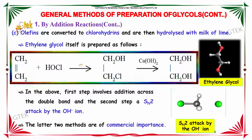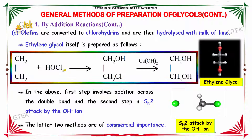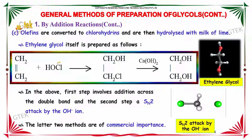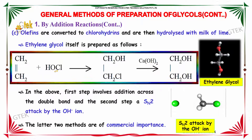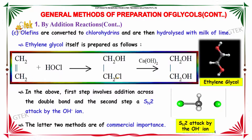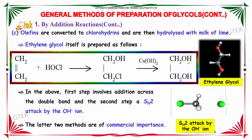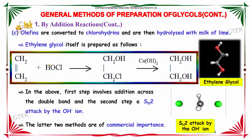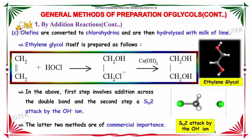The third method is that olefins are first converted to chlorohydrins and are then hydrolyzed with milk of lime, which is calcium hydroxide (Ca(OH)2). Ethylene glycol is prepared as follows: CH2=CH2 is reacted with hypochlorous acid to produce CH2OH-CH2Cl. On further addition of milk of lime (Ca(OH)2), we obtain CH2OH-CH2OH, which is ethylene glycol. The first step involves addition across a double bond, and the second step involves an SN2 mechanism where OH replaces Cl.